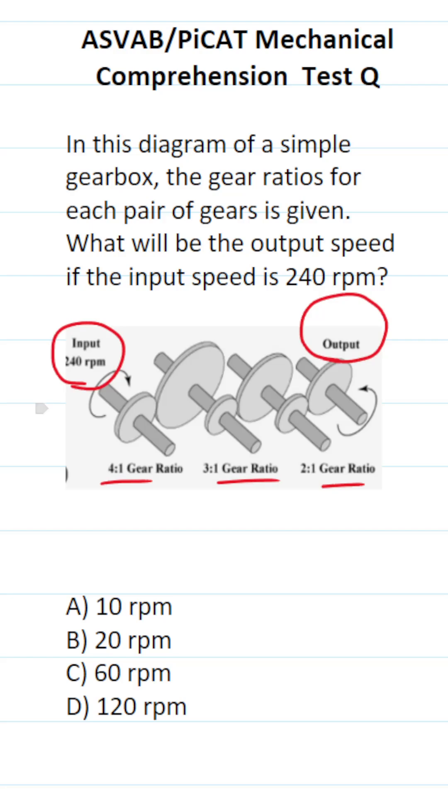So let's get started. We know our input speed is 240, and this gear and this gear have a ratio of 4 to 1. To figure out how many RPMs this one is spinning at, we're going to divide this by 4, which is 60. So this one's spinning at 60 RPMs.